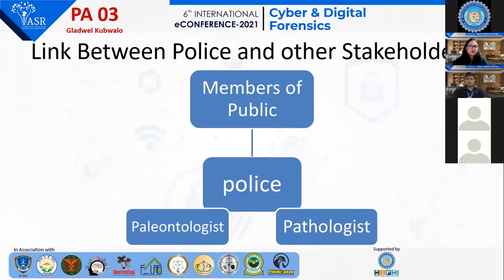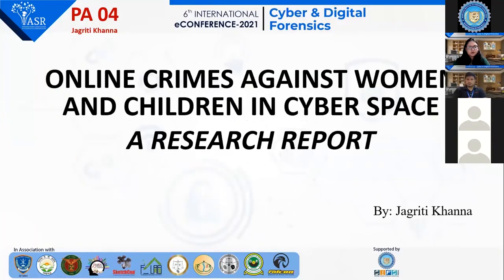As police conduct investigations, they cannot work alone — they depend on other stakeholders to help in the investigation of crimes. For example, members of the general public give police tips on how to handle some cases. Police also depend on other professionals like pathologists to conduct post-mortem examinations, as well as botanists and others.